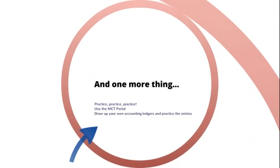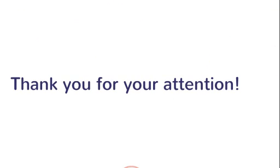To practice, read accounts of public companies, draw up your own ledgers, and try doing some of the examples listed in the textbook and attempt the MCT questions on the MCT portal. By constantly practicing, you will become familiar with the logic and operation of double entry bookkeeping and it will become very easy for you. Good luck, thank you for your attention, and if you do have any questions, please get in contact with us via our website at www.qlts.co.uk.